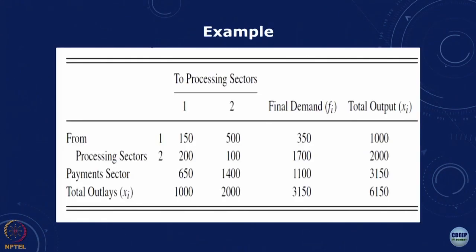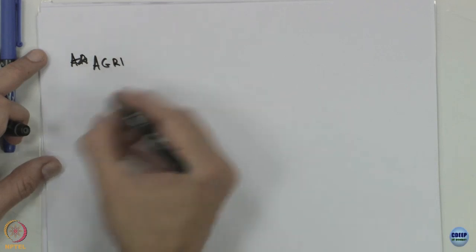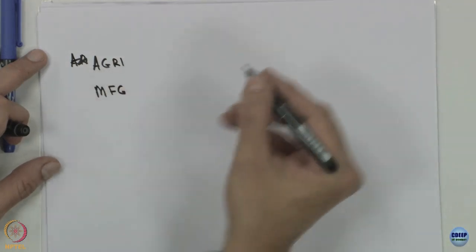With this, we will take an example from the book by Blair and Miller. It is a two-sector example and we will process it to see what are the coefficients, how do we take the Leontief inverse, what is the implication of the Leontief inverse, and how can we use it to see what-ifs if there is a growth or change in sectoral demand. If we look at this sector, we have essentially an agricultural sector and a manufacturing sector.